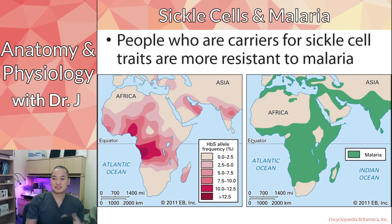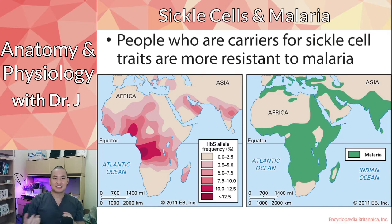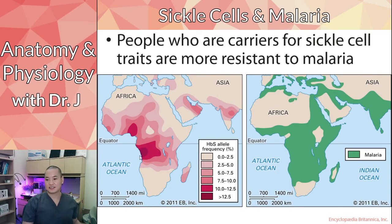So why do we still have sickle cells if they cause anemia? This is interesting, especially if you're a bio major covering genetics and evolution. People who are heterozygous carriers of the sickle cell trait are more resistant to malaria. The parasite that causes malaria has a harder time replicating in sickle cells than in normal red blood cells. This is why we often see it more common in the African-American population.